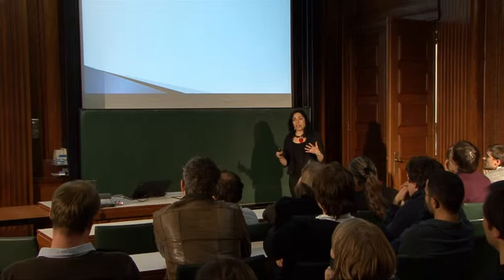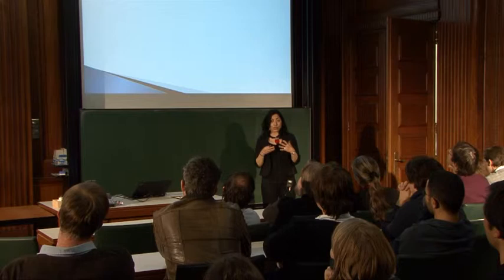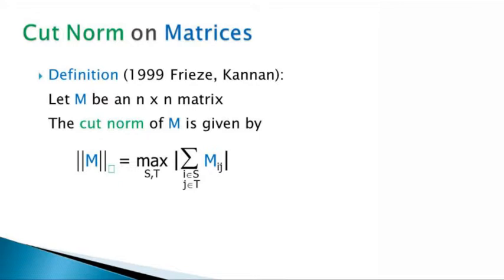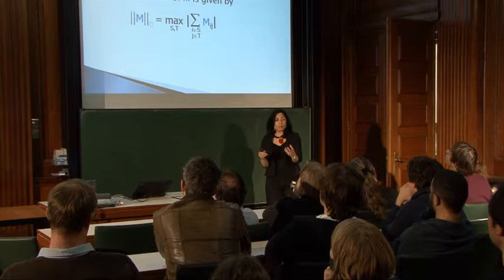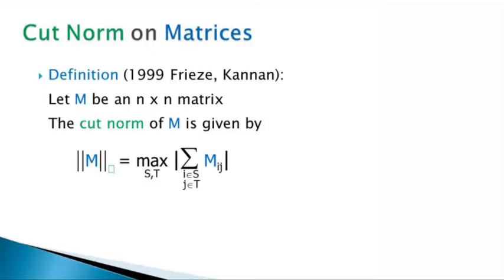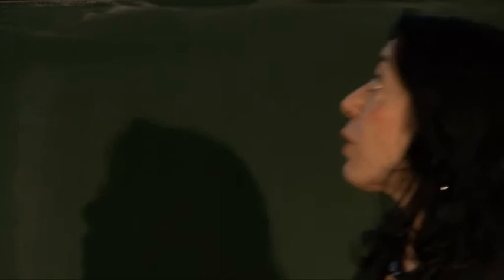Now we want to come up with a metric on graphs — a way to test if two graphs are close to each other — and hope that convergent graph sequences will be Cauchy in that metric. Going back to 1999, Frieze and Kannan came up with what they called a cut norm on matrices. They looked at an N×N matrix and maximized over two subsets. The reason they called it the cut norm is that if you think of T as the complement and maximize all of the edge weights — the sum of all edge weights — that would be a cut norm. In general, we can do this for two separate subsets S and T, and it differs by a factor of four.